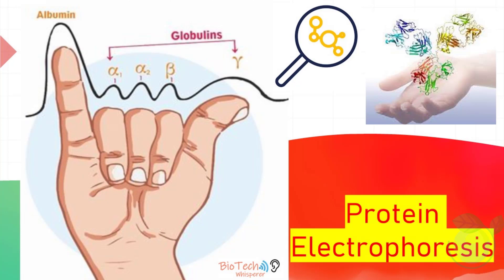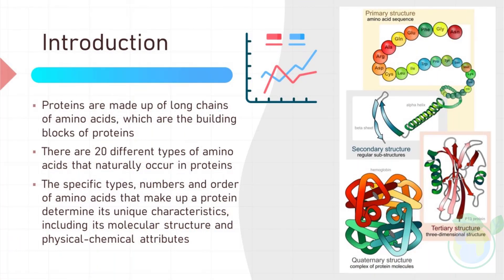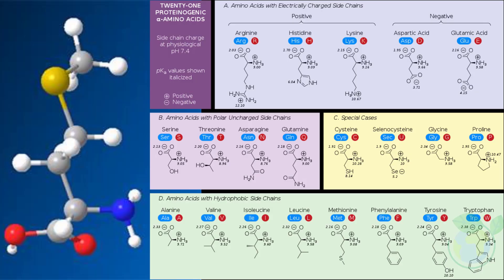Introduction. Proteins are made up of long chains of amino acids, which are the building blocks of proteins. There are 20 different types of amino acids that naturally occur in proteins. The specific types, numbers, and order of amino acids that make up a protein determine its unique characteristics, including its molecular structure and physical chemical attributes. This diversity in the amino acid composition is the reason why proteins have different structures and functions.